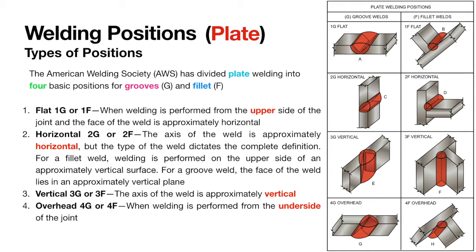The last is the overhead position. In this position, the welding is carried from the underside of the joint. It is the most complicated and difficult position to work in.